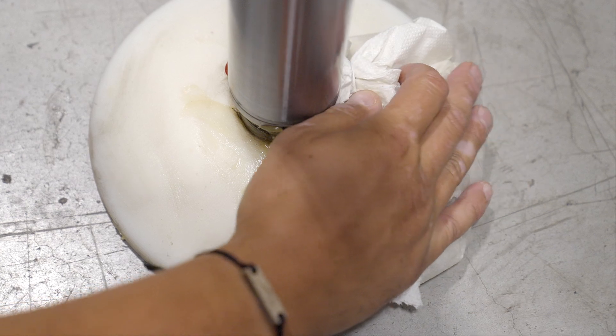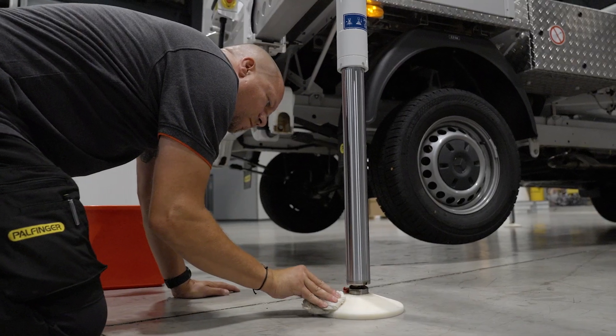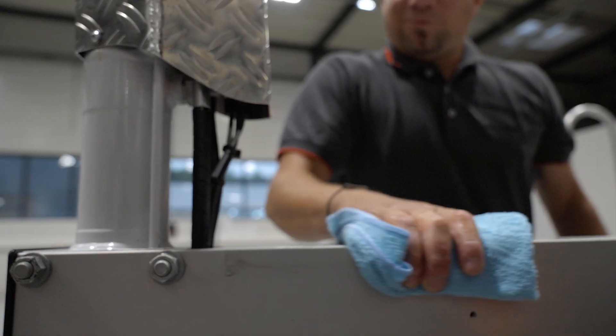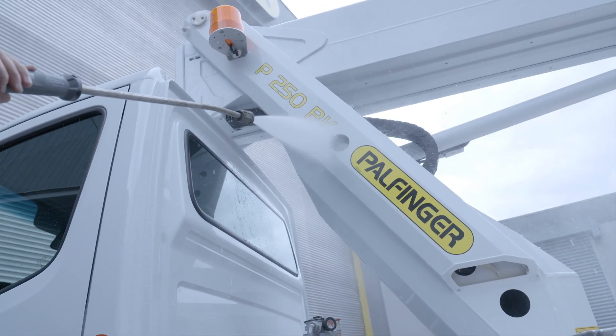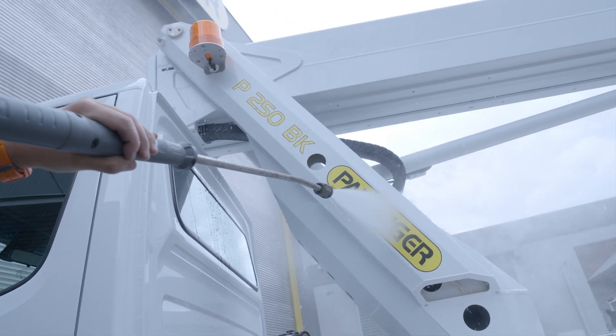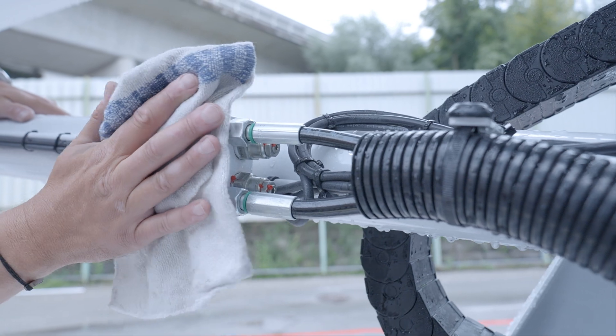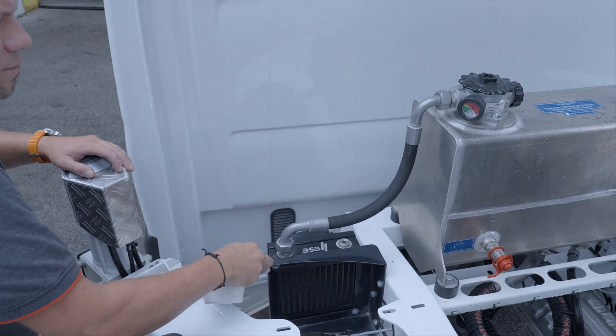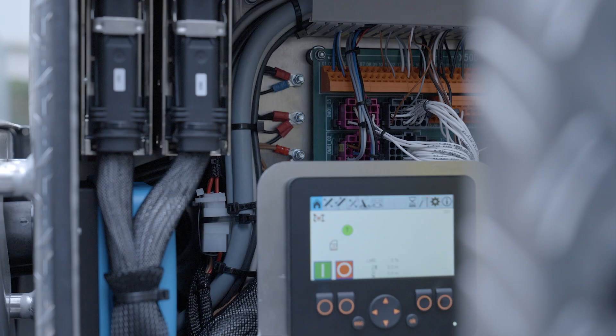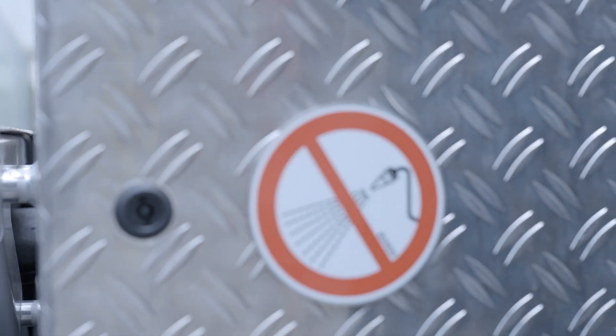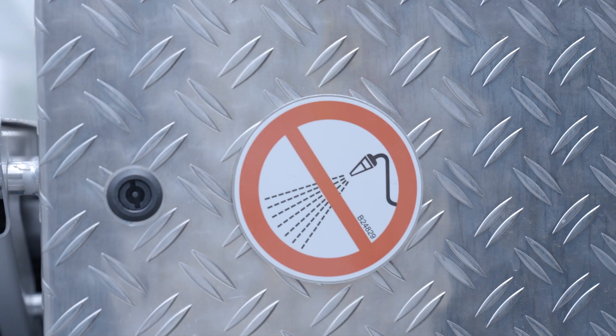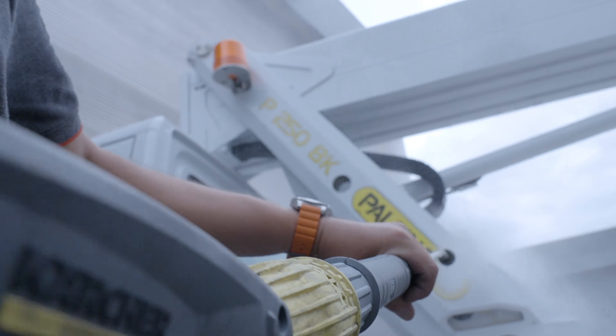Before starting maintenance work, the appliance must be cleaned with water and suitable cleaning agents. When using a high-pressure cleaner, hose lines and valves must not be cleaned with a direct jet of water. Special care must be taken with electronic components, which are specially labeled. The water temperature must not exceed 60 degrees Celsius.